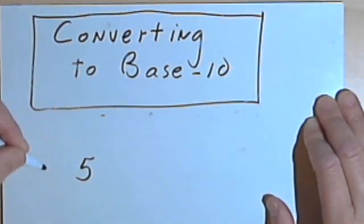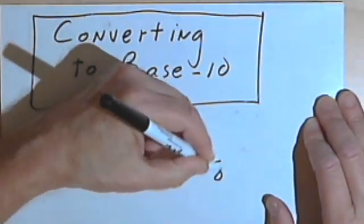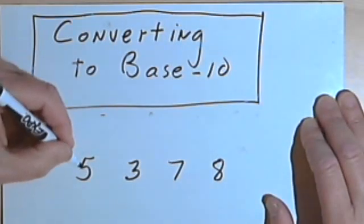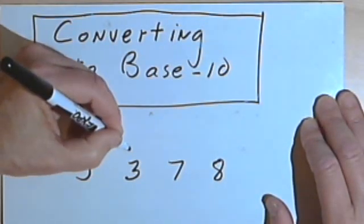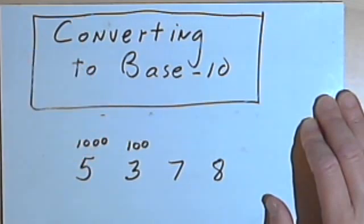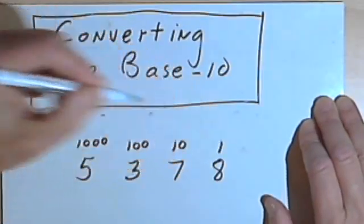So let's take a look at base-10 before we get going with actually converting things. Let's say I've got a number like 5,378. As you probably know, we say that the 5 is in the thousands column, and the 3 is in the hundreds column, the 7 is in the tens column, and the 8 is in the ones column.